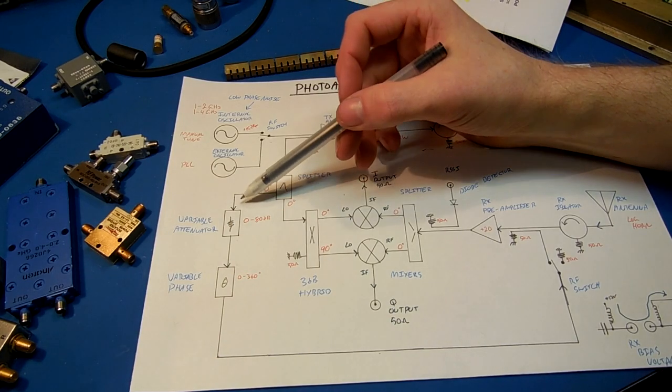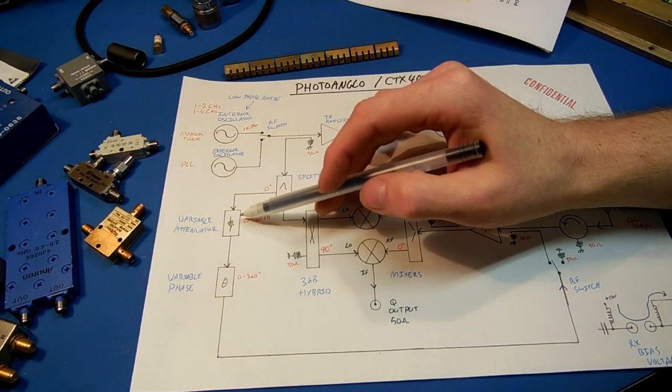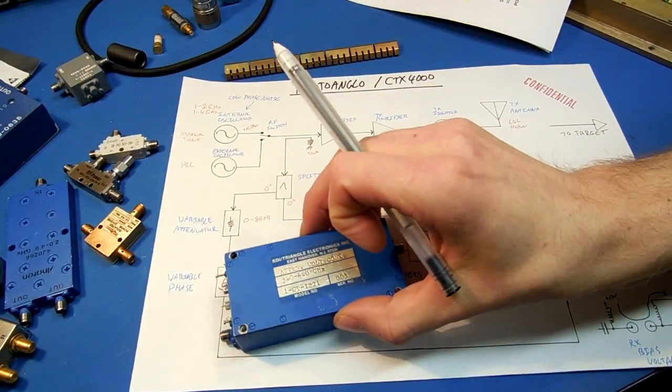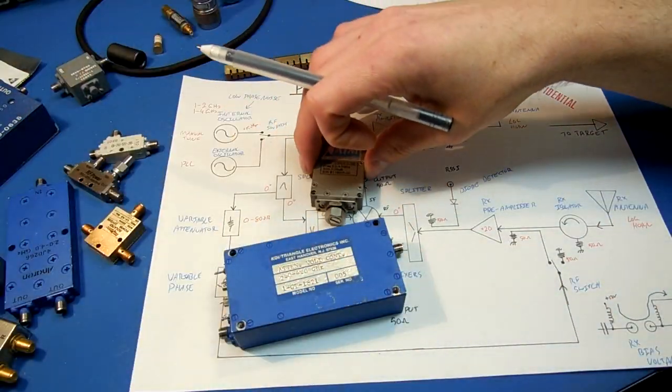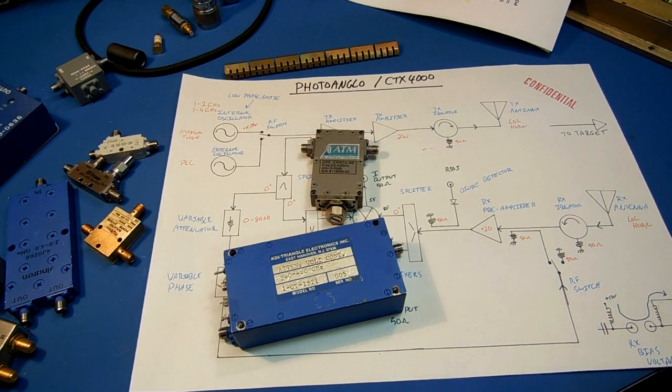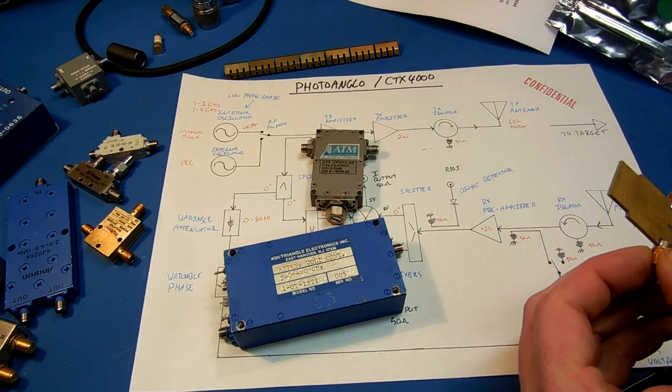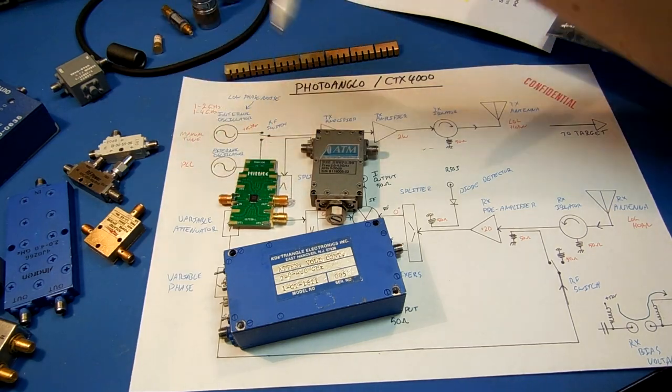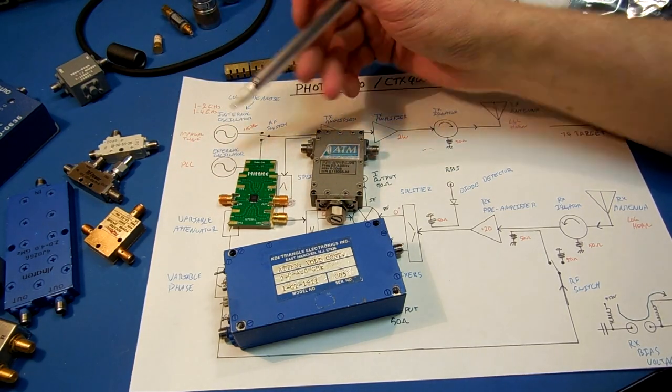One of the arms essentially feeds this is an active canceler circuit. This is a variable attenuator. This is a phase shifter. So, what we want to do is, we have essentially a copy of our transmitted signal.